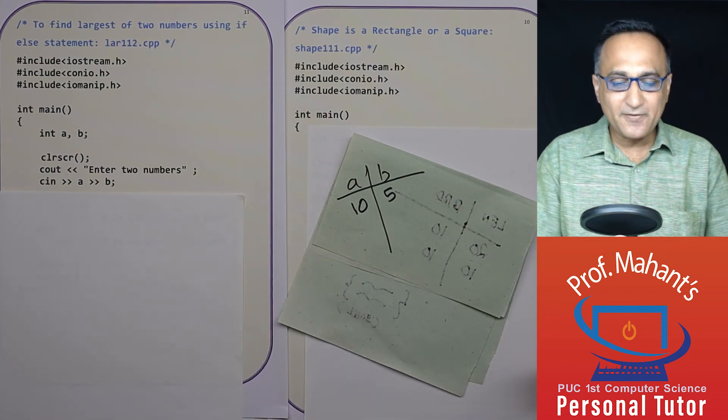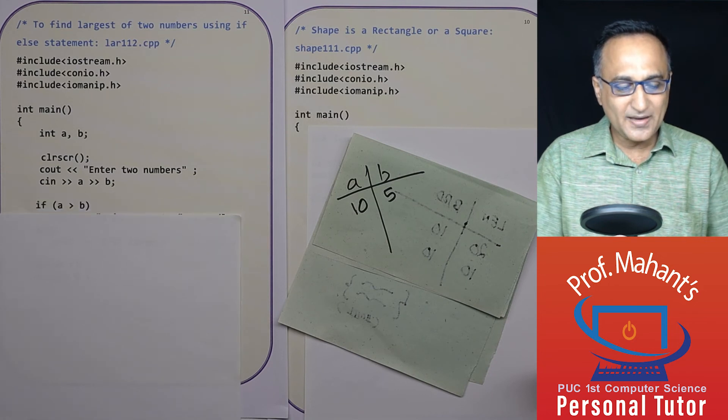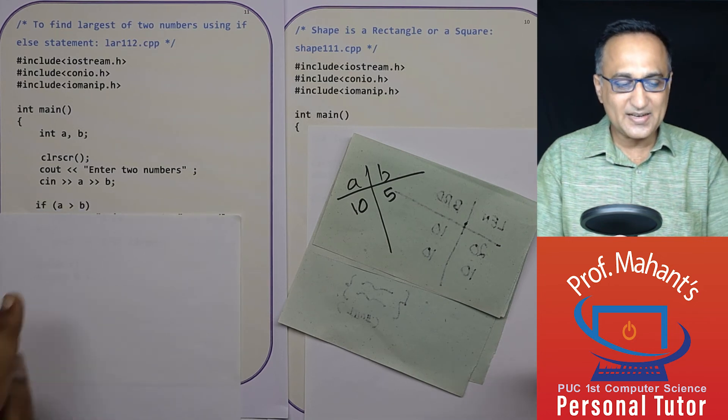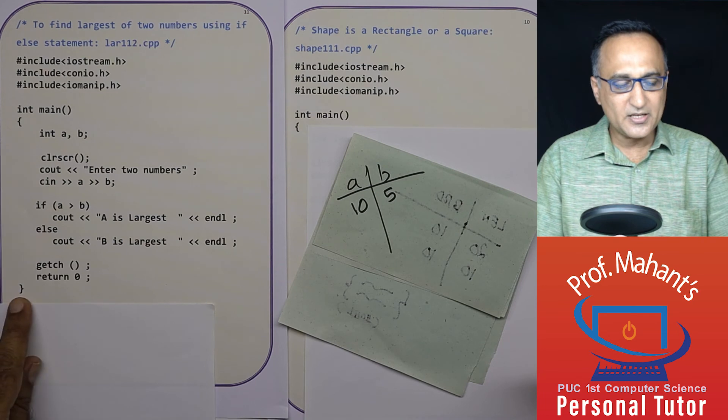So using the simple if and else I can tell whether a is bigger or b is big. So if a is greater than b, in this case 10 is greater than 5, then it should print a is the largest and then it should end the program.